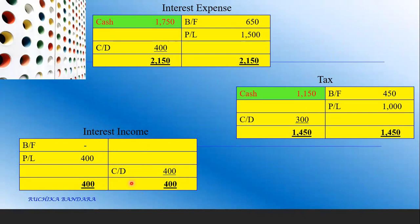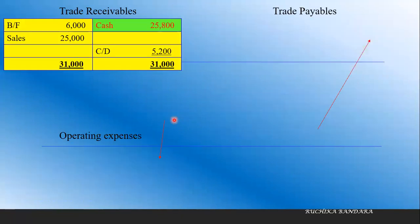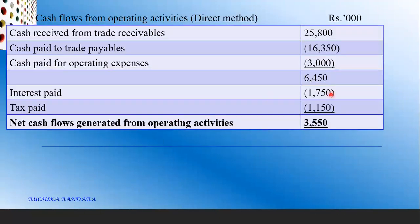Regarding interest income: the opening receivable is nil (dash), but the carried-down balance is $400. Additional information states other income consists of a gain on disposal of motor vehicle $800 and interest receivable on a five-year fixed deposit $400. When simplified, there is no cash amount — the account balances without a cash entry. Interest paid and tax paid are both outflows. Since the final balance is a positive value, we write 'net cash flows generated from operating activities.'